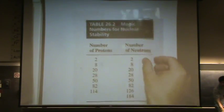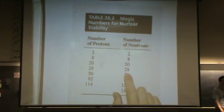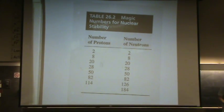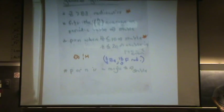You can also have double magic. So for example, if a proton has a magic number and a neutron, that's doubly magic. It's more likely stable. Okay, let me give you an example of a double magic.